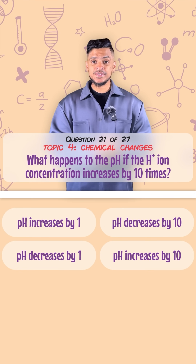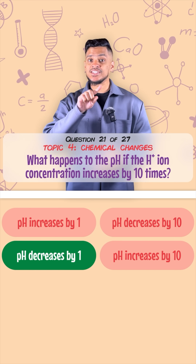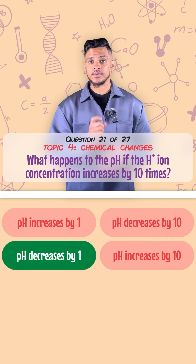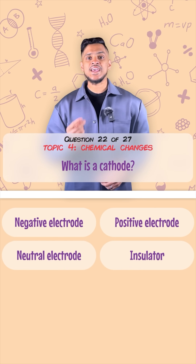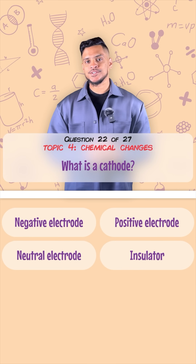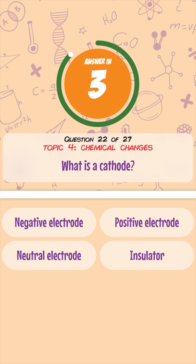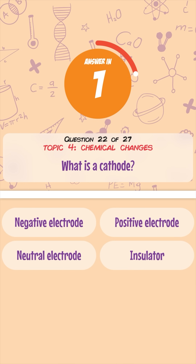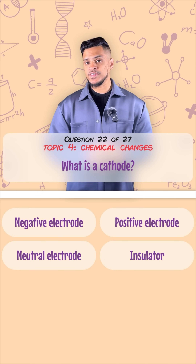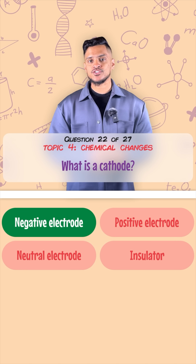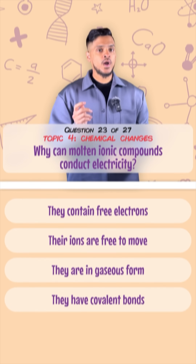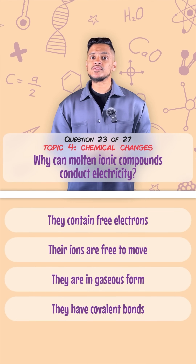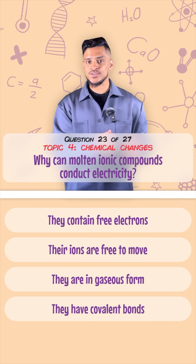What happens to pH if H+ concentration increases by 10 times? The pH decreases by one. What is a cathode? It's a negatively charged electrode.